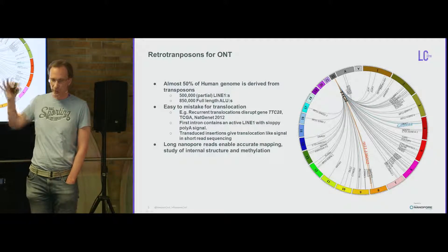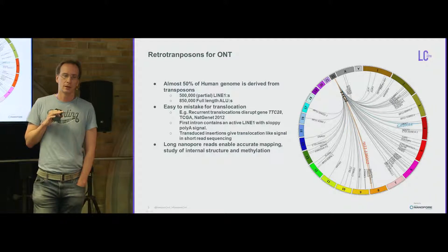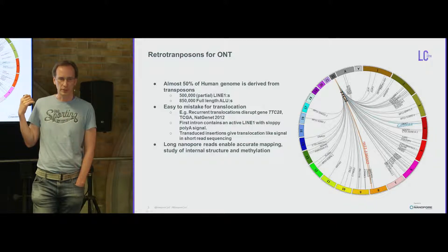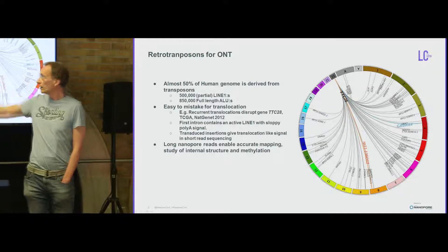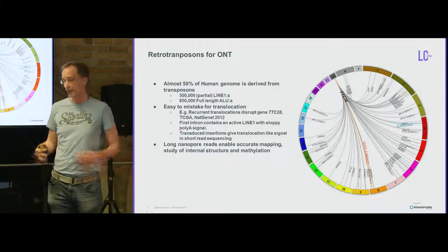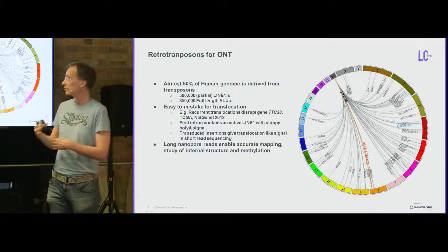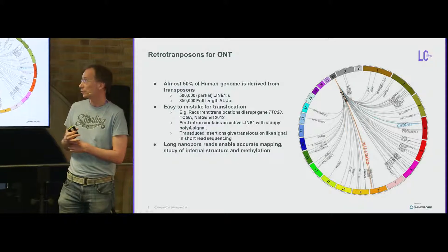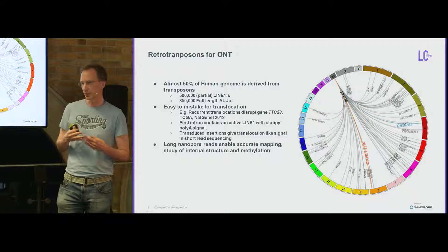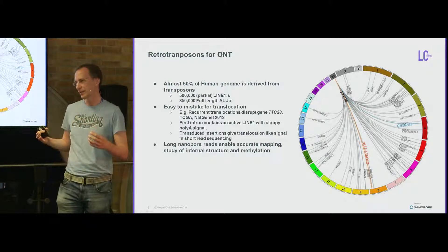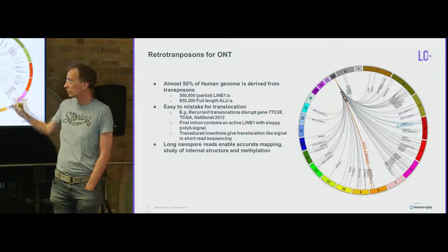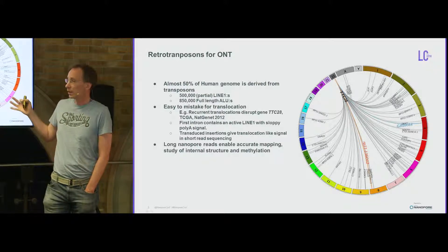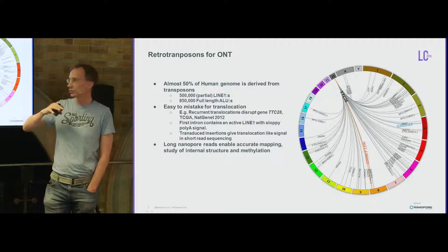These copy events are very easy to mistake for translocations. For example, a Nature Genetics paper from TCGA said that the TTC28 gene is often disrupted by balanced translocations in colorectal tumors. That sounds fishy because it would be much easier to delete the gene or introduce a point mutation. When you look closely, there's actually a very active LINE-1 element in the first intron of TTC28.